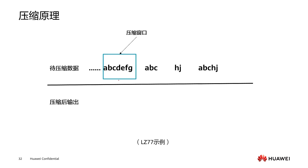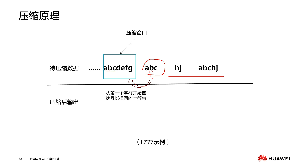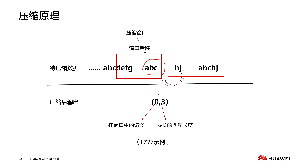Let's learn about the principle of compression using a string as an example. There is a compressed window containing a string A, B, C, D, E, F, G. When the segment ABC needs to be compressed, the system searches from the first character in the compressed window for the longest identical string. It finds that ABC matches the previous ABC, so it records the string's offset in the window and the longest match length — for example, recorded as ZO3.